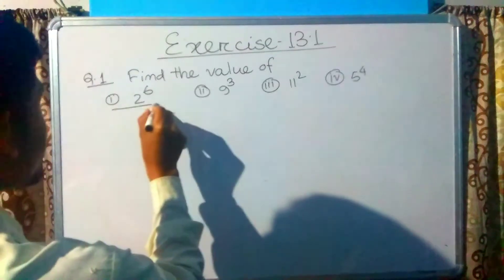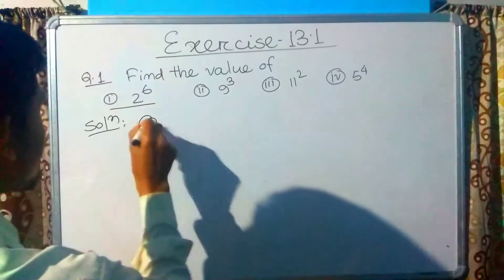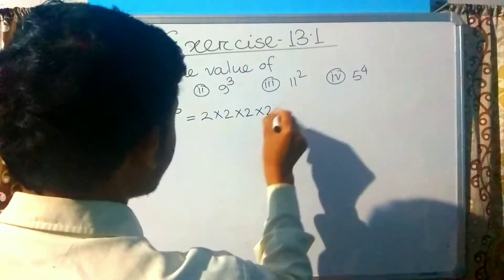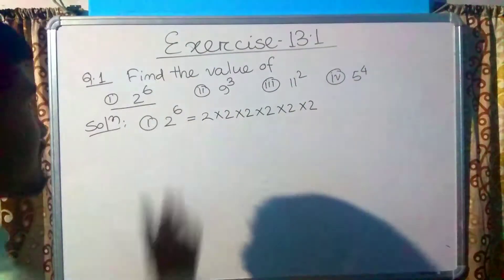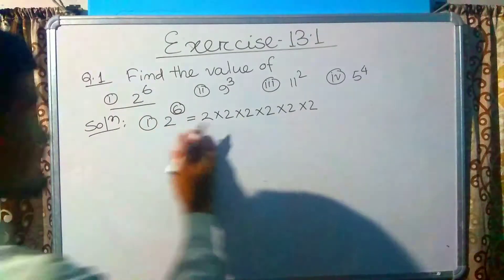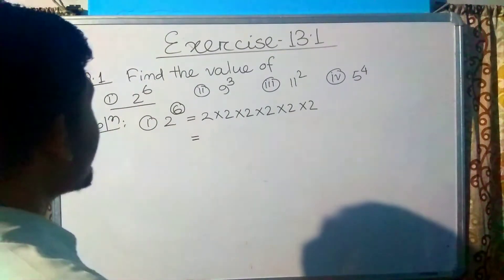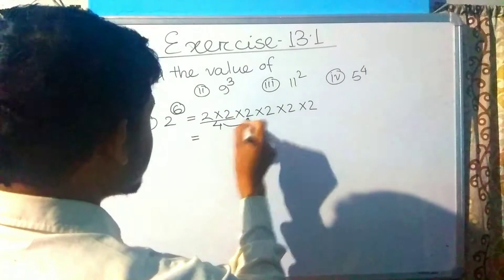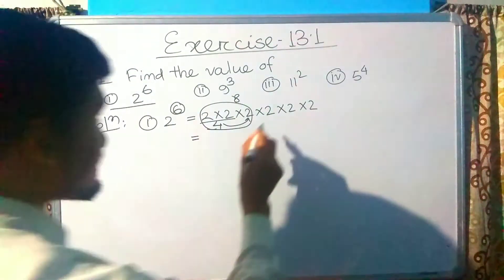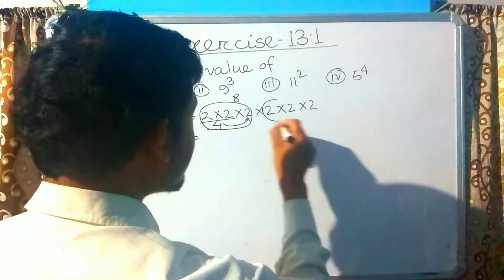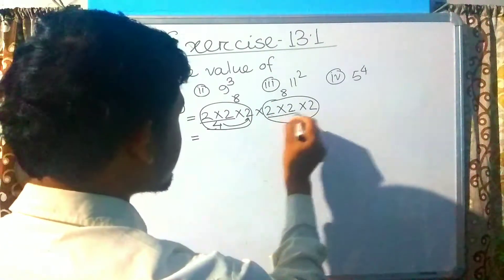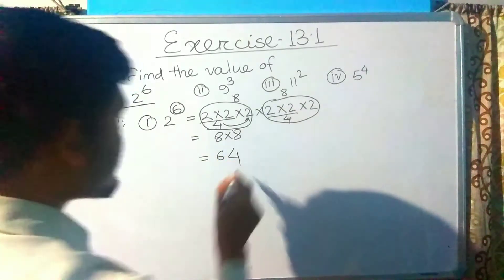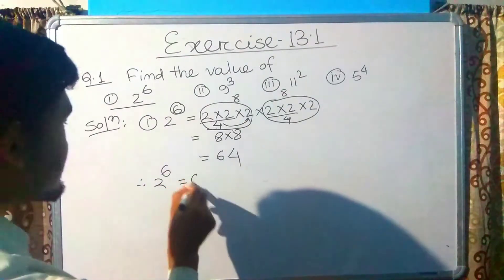Let's find the value of 2 raised to the power 6. This means 2 multiplied by 2 multiplied by 2 multiplied by 2 multiplied by 2 multiplied by 2, which is 6 times. Working it out: 2×2=4, 4×2=8, 8×2=16... and 8 multiplied by 8 equals 64. So the value of 2 raised to the power 6 is 64.